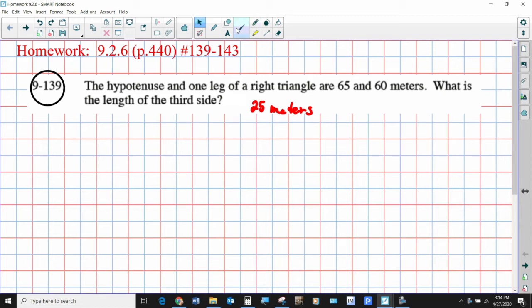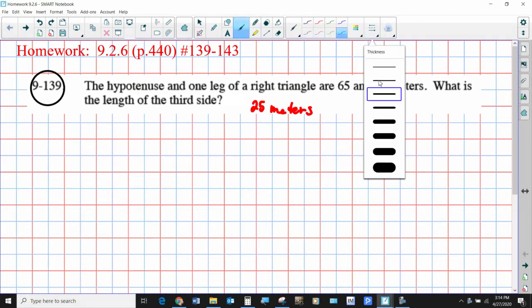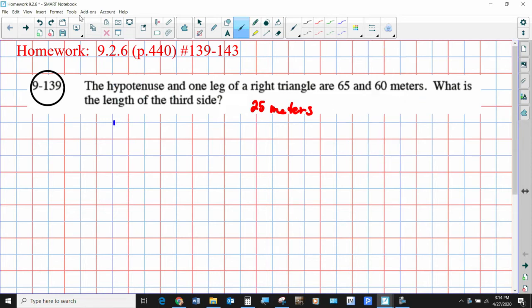Alrighty, let's check and see how you did on our homework last night. Let me pull up a pen here. Okay, so the hypotenuse and one leg of a right triangle are 65 and 60 meters. What is the length of the third side?